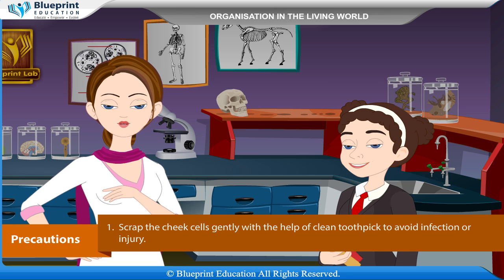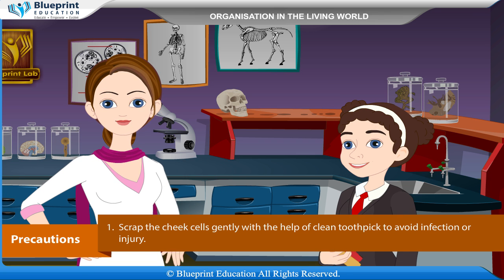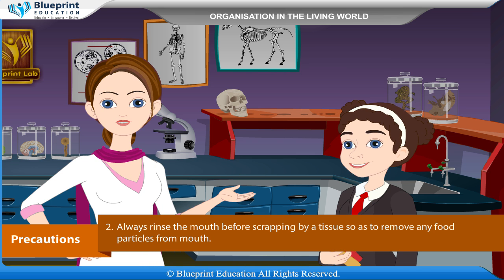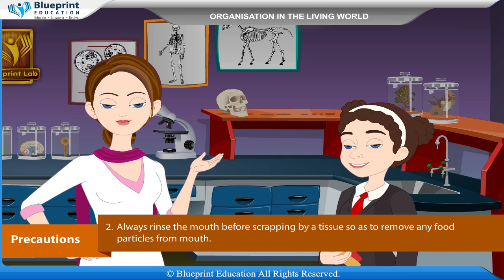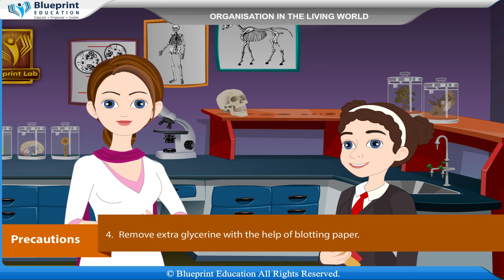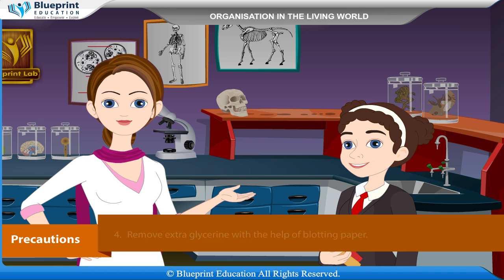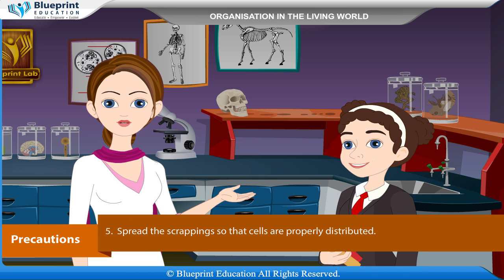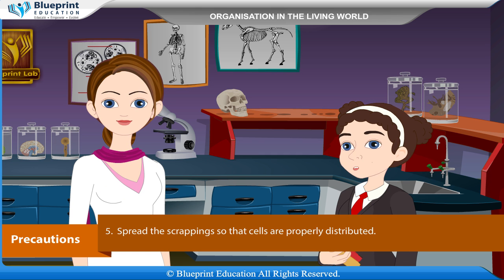Precautions: Scrape the cheek cells gently with a clean toothpick to avoid infection or injury. Always rinse the mouth before scraping to remove any food particles. Place the cover slip gently to avoid entry of air bubbles. Remove extra glycerine with blotting paper and spread the scraping so that cells are properly distributed.